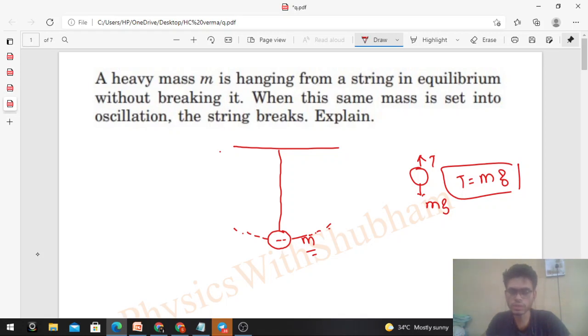So the net force on the particle, which is T minus mg towards the center, that will be the centripetal force. What is the centripetal force? m v² by r. v² by r is the centripetal acceleration.